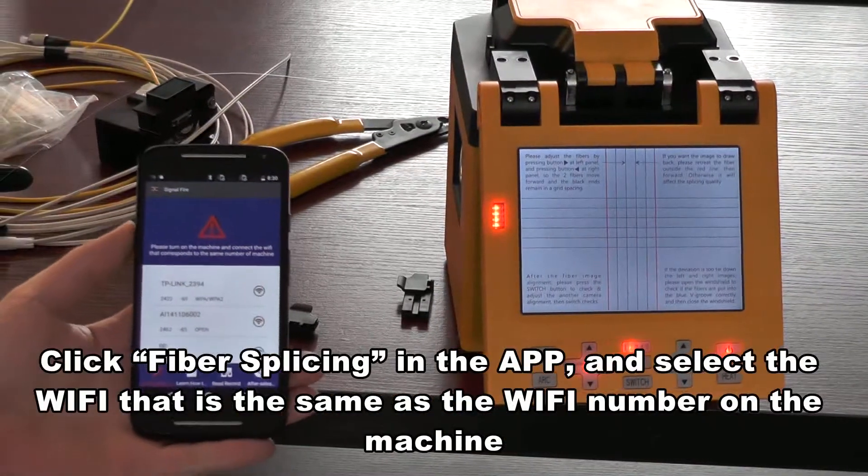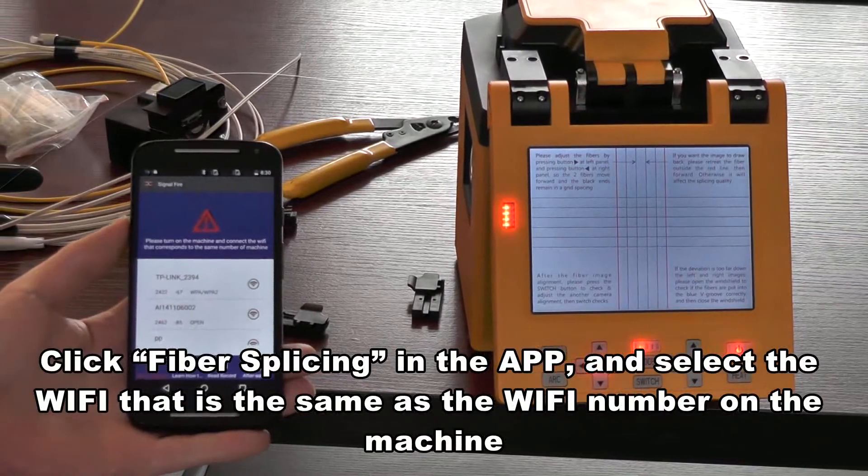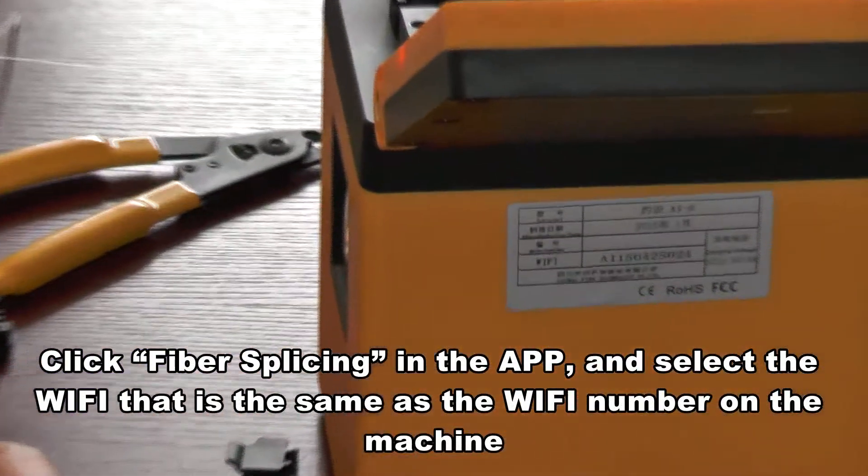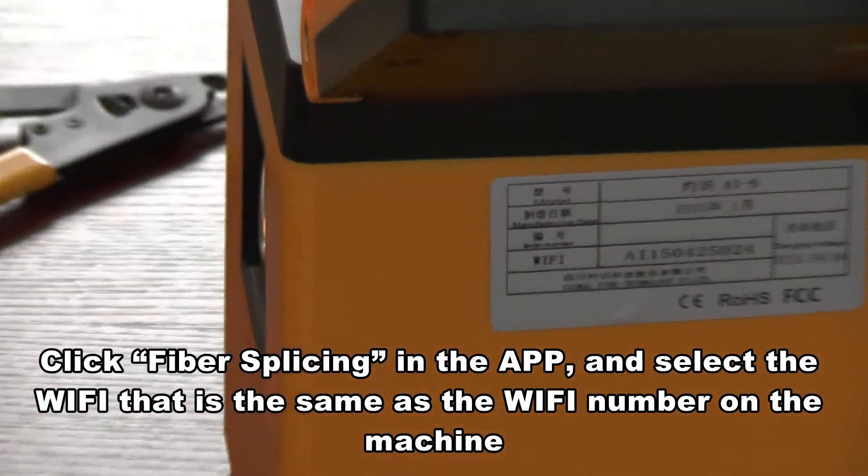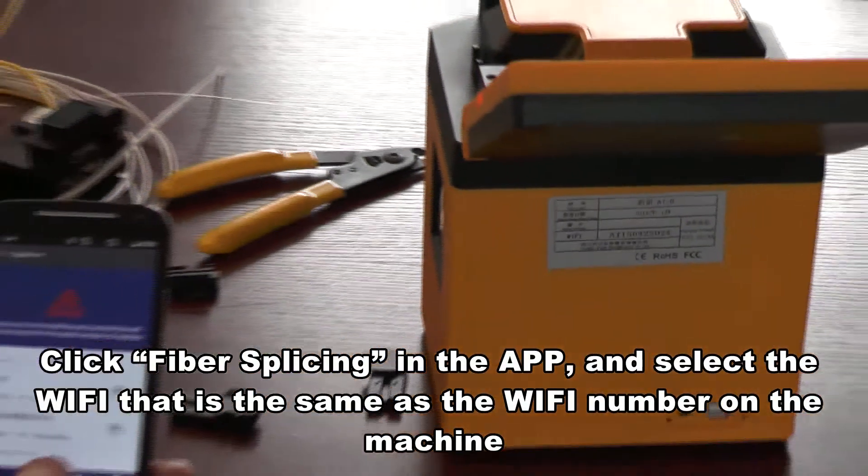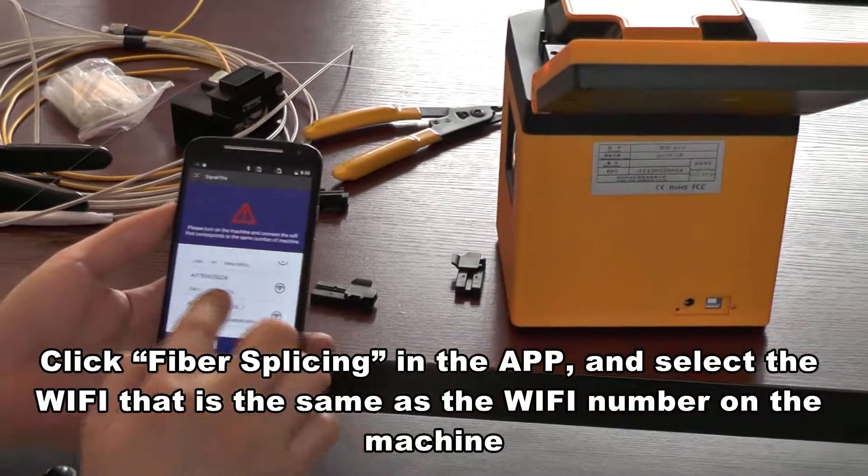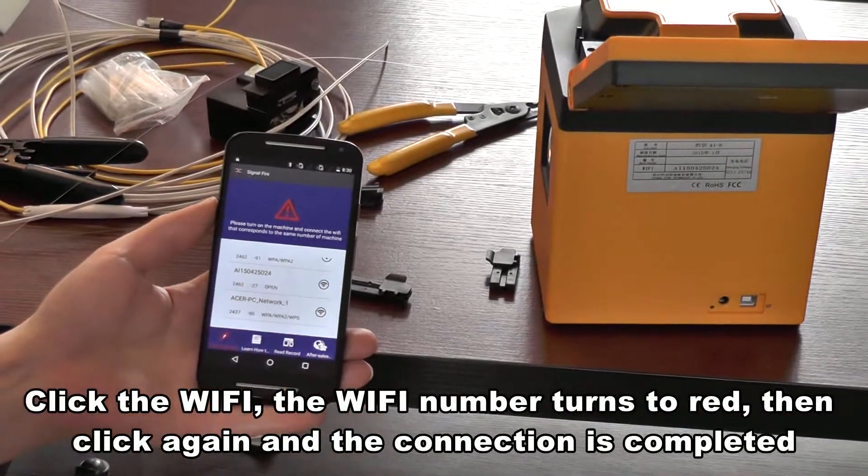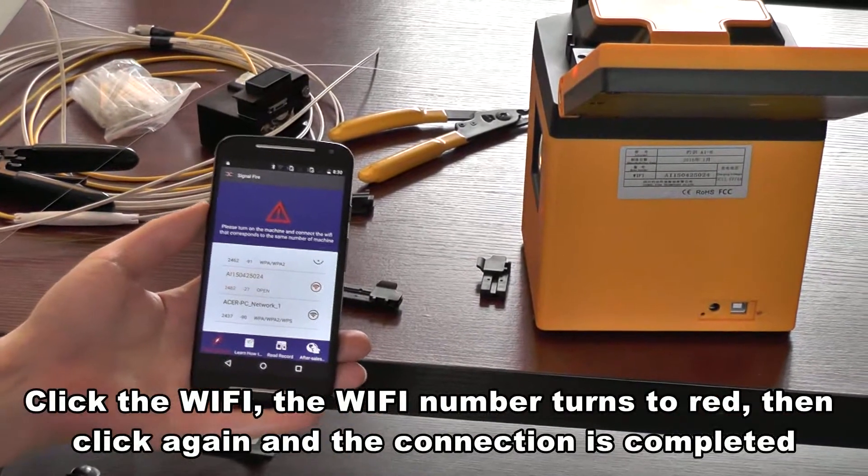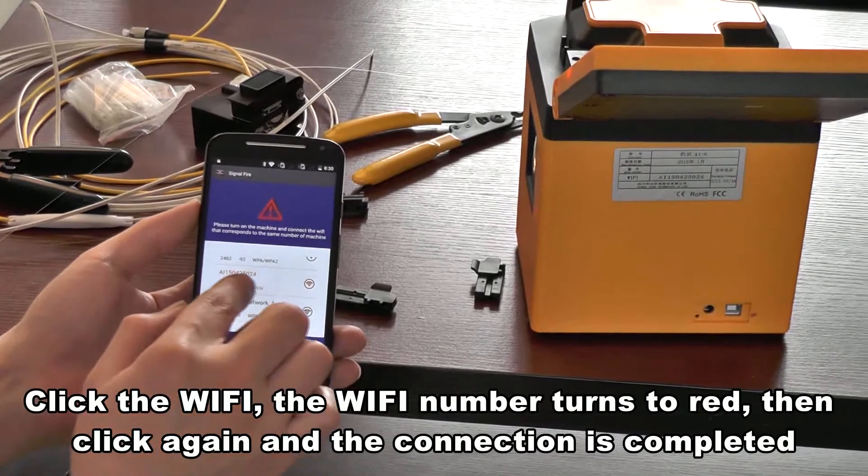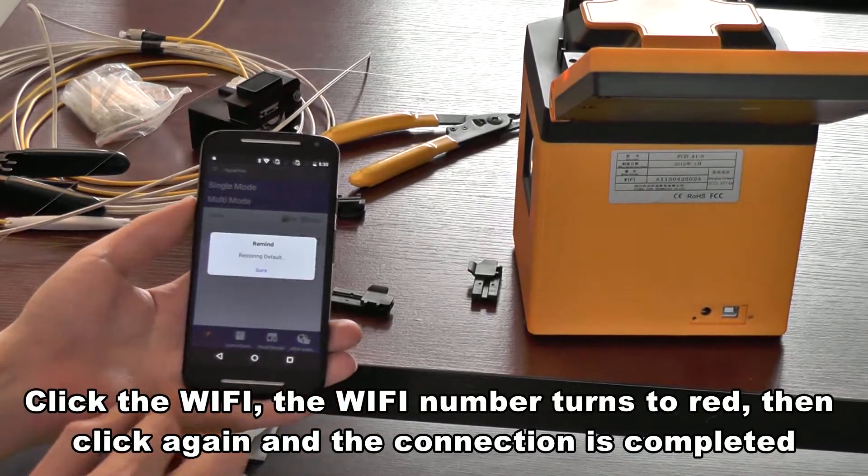Click Fiber Splicing in the app and select the WiFi that is the same as the WiFi number on the machine. Click the WiFi. The WiFi number turns to red, then click again and the connection is completed.